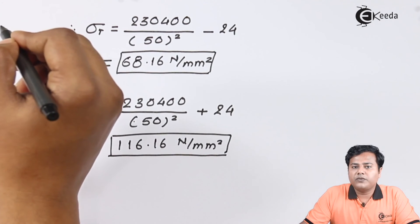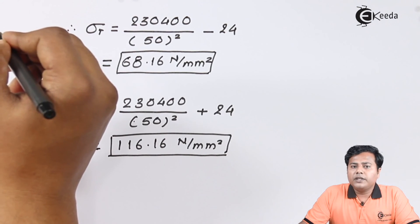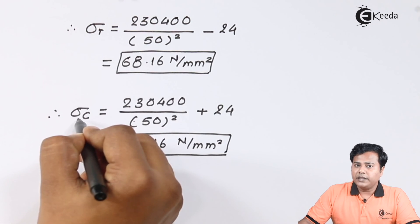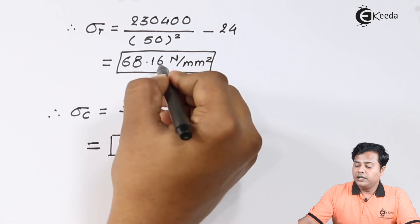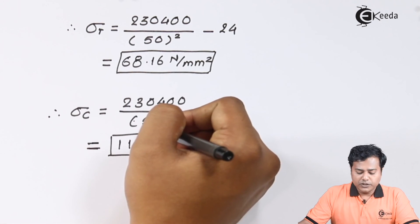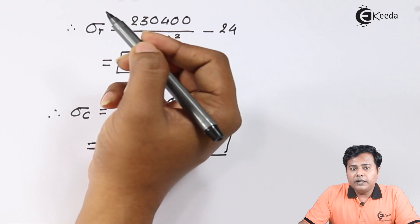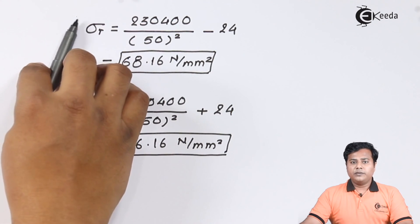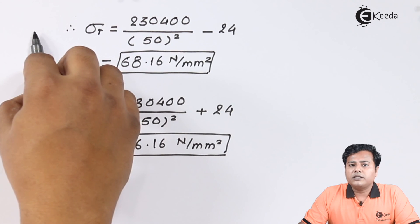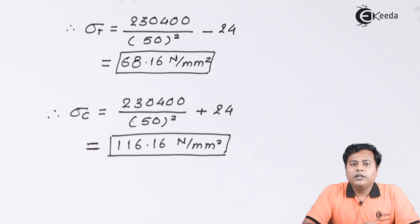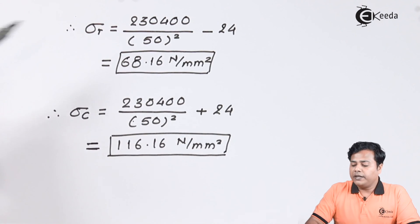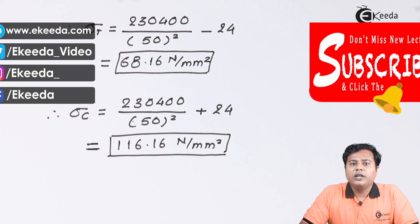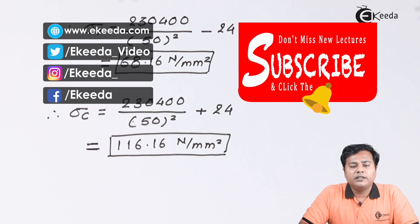These are the expected answers. As a verification step, radial stresses are always smaller than circumferential stresses — which is consistent with our answers. In summary, we substituted the given pressure values, found constants A and B, then calculated the final radial and circumferential stresses at mean radius.